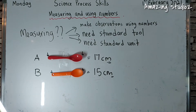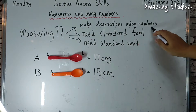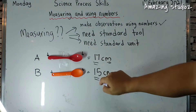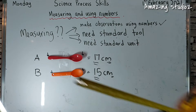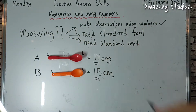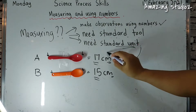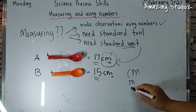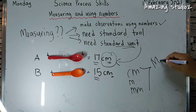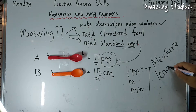Now we know that spoon A, the red spoon, is longer — it is 17 cm — and spoon B is only 15 cm. We have already demonstrated: we made observations using numbers, 17 and 15. We need a standard tool: the measuring tape. And the standard unit is centimeter, meter, or millimeter — used to measure length.